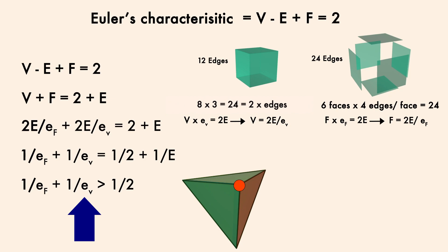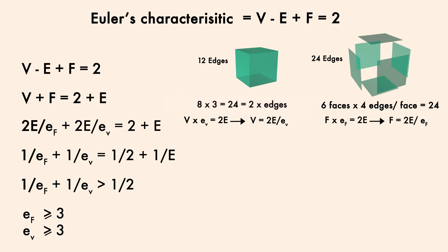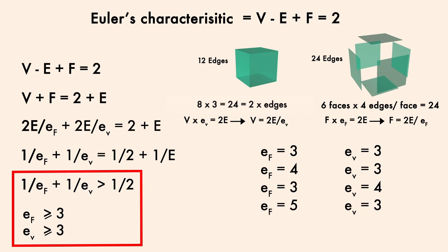Then e_v is the edges touching each vertex, so like for a tetrahedron, a vertex has 3 edges touching it. But again, this can't be any lower. So e_f and e_v must both be greater than or equal to 3. And thus the only integers that will satisfy these inequalities are 3 and 3, 4 and 3, 3 and 4, 5 and 3, and 3 and 5.